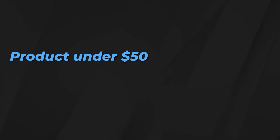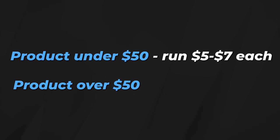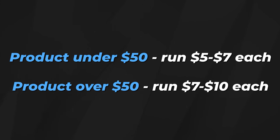Remember, you're not going to spend the full $20 on each one of these assets — it's just there to build up data quicker. If you have a product under $50, let each ad run to around $5 to $7. If your product is over $50, let it run to around $7 to $10. Once that happens, you'll have the data you need to know which ad is going to perform best. I'm going to pull up one of my old creative tests so you can see a live example of what to look for and how to choose the winner.